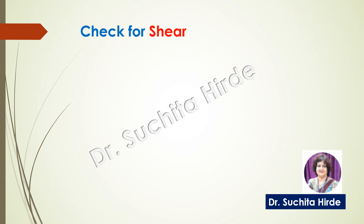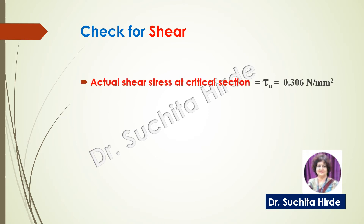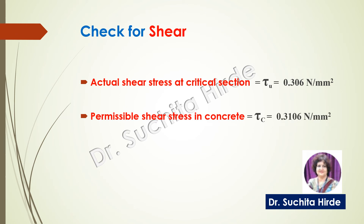To summarize the shear check: actual shear stress at the critical section is 0.306 newton per millimeter square, and permissible shear stress in concrete is 0.3106 newton per millimeter square. For safe design, tau_c must be greater than the actual shear stress at the critical section. Since 0.3106 > 0.306, this design is safe in shear.